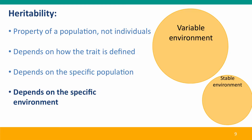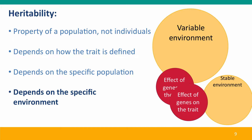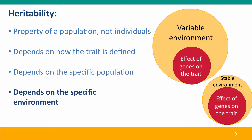Finally, the heritability of a trait depends critically on the specific environment. If environments differ, then even if we're considering two genetically identical populations, the effects of the environment will cause the heritabilities to be different. So in the stable environment shown in this diagram, we have 45% heritability, but in the variable environment the heritability is only 25%, even though the two populations are genetically identical.